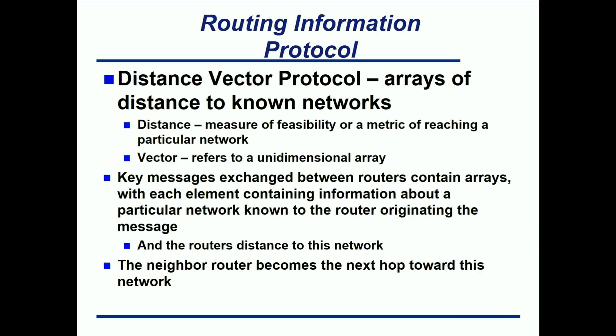The thing about RIP version 2 is that it is a distance vector protocol — it is like the epitome of the distance vector protocol. What that actually means is a ray of distances to known networks. If you break it down: distance — how far, or what is the metric to a particular network — and vector — a unidimensional array, like what interface am I pointing towards. There are some key messages exchanged that contain the outgoing interface, which is the array.